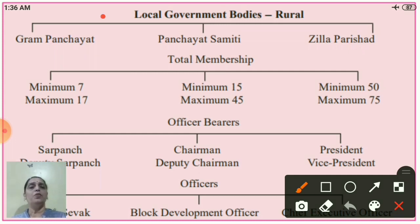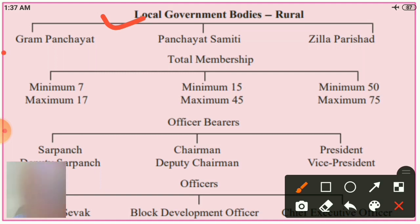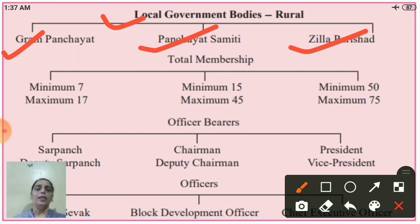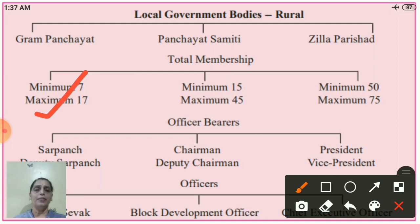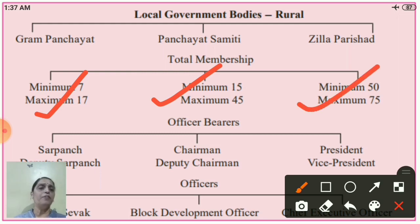This is a chart of local government bodies — rural. It is divided into three parts: Gram Panchayat, Panchayat Samiti, and Jilla Parishad. The total members in Gram Panchayat are minimum 7 and maximum 17. In Panchayat Samiti, minimum 15 and maximum 45 members. In Jilla Parishad, minimum 50 and maximum 75 members.